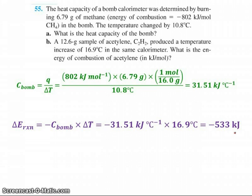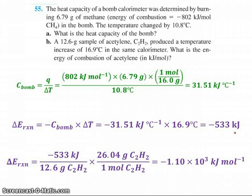But that's not how they want to see it. They don't want to know it just for this reaction. They want to know it in kilojoules per mole of acetylene, so I've got to do some work. I know those 533 kilojoules came from 12.6 grams of acetylene, so now I need to do a quick mole conversion. One mole of acetylene is worth 26.04 grams, and that shows me that this reaction releases negative 1.1 times 10 to the third kilojoules per mole, or negative 1,100 kilojoules per mole. And that is how you handle calorimetry.